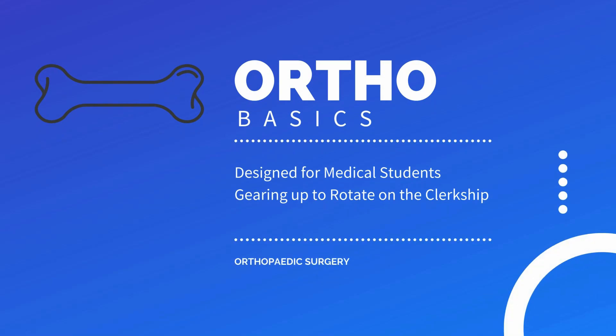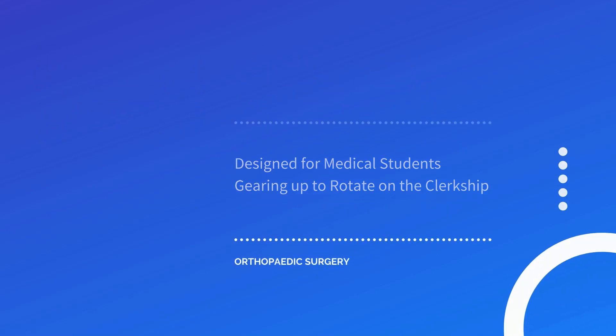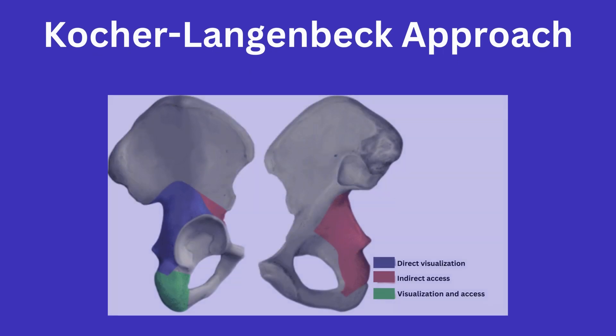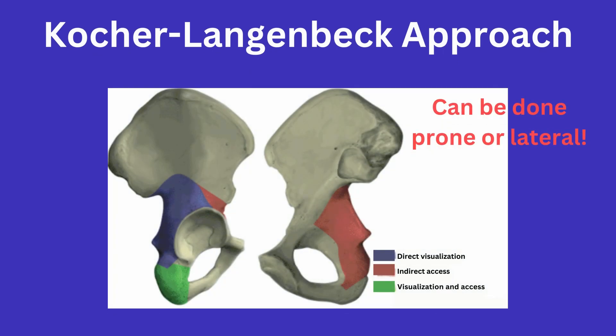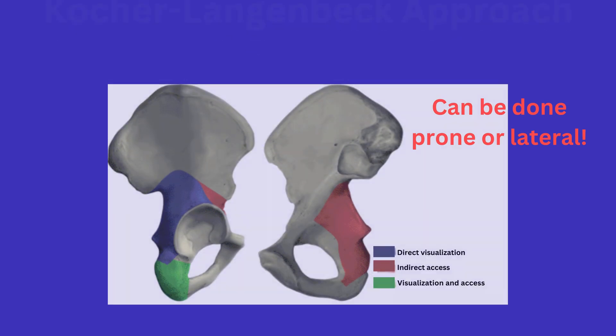The Kocher-Langenbeck approach is a common posterior hip approach to access the posterior column, posterior and superior aspects of the acetabulum, and indirectly the quadrilateral plate. This approach can be done with the patient either prone or in a lateral decubitus position.